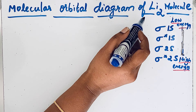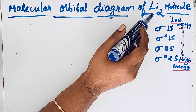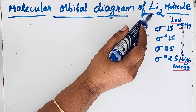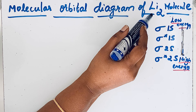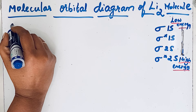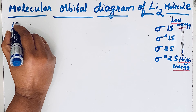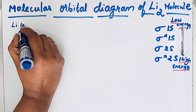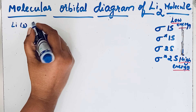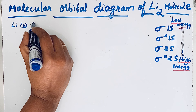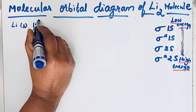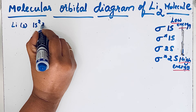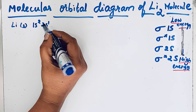Lithium molecule is formed by the combination of two lithium atoms. Lithium has atomic number 3, so its electronic configuration is 1s² 2s¹.